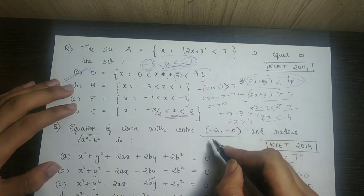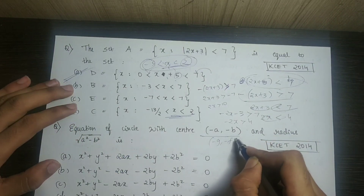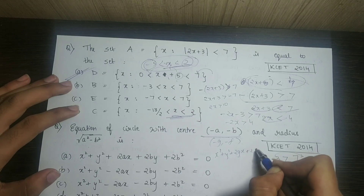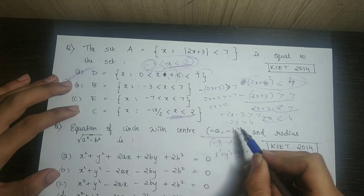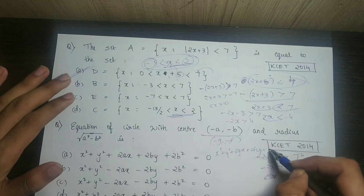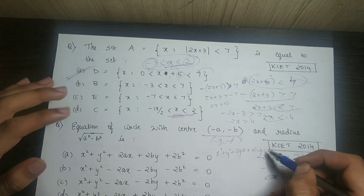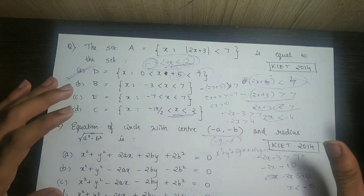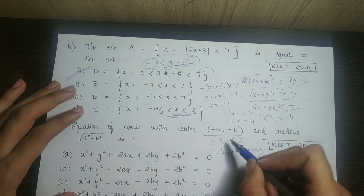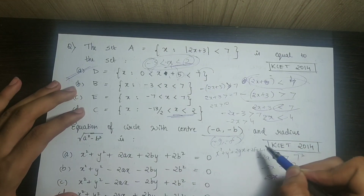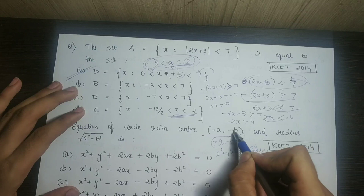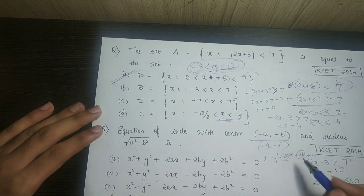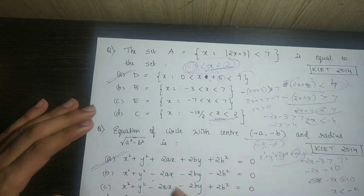The next question involves the equation of a circle. The standard form is x squared plus y squared plus 2gx plus 2fy plus c equals 0. The center is at minus g, minus f, and the radius is the square root of g squared plus f squared minus c. There is an x-coefficient 2g and y-coefficient 2f, so the center is minus a, minus b.